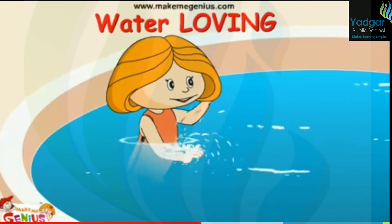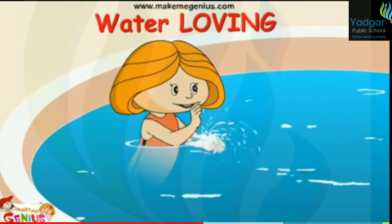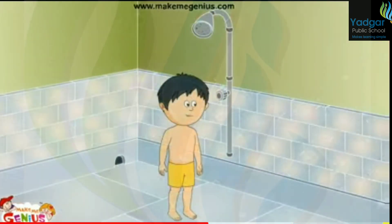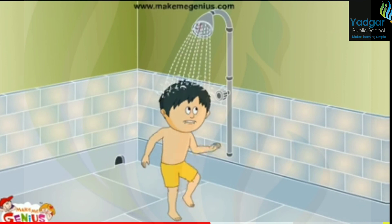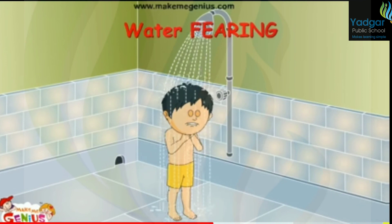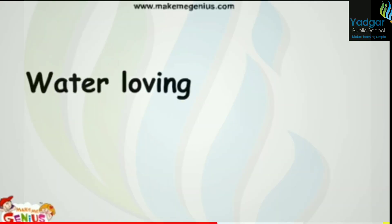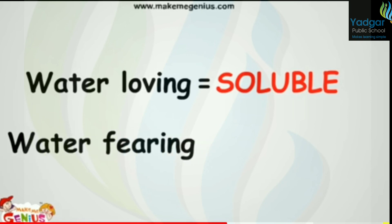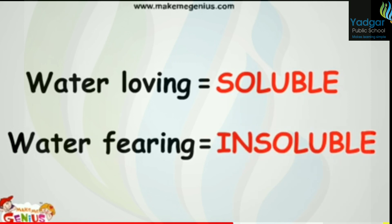Solutes can be different. Some are water-loving — they will mix in water very fast. But there are others who do not like water — they are water-fearing. If the solute is water-loving and it dissolves, then it is soluble, like salt and sugar. But if the solute is water-fearing and does not dissolve, then it is insoluble, like sand.